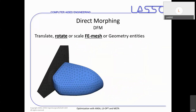Let's finish box morphing and have a look at the other big topic concerning morphing: direct morphing. Direct morphing has been enhanced and spread a lot in the last years. The main advantage of direct morphing is that you do not have to create boxes at all, but directly touch the model — the elements or the geometry. You can also use parameters for almost every direct morphing action in order to use them in an optimization.